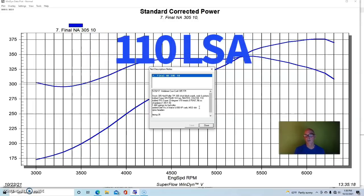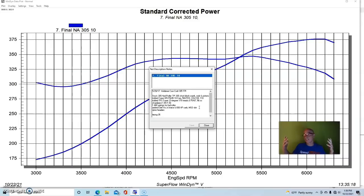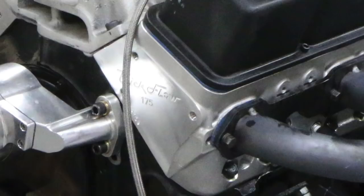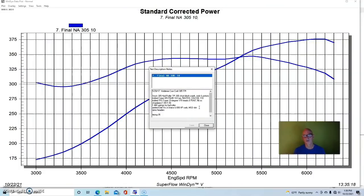Allowing this thing to flow, we replaced the factory iron heads with a set of Trick Flow Super 23 degree 175 heads, ideally suited for this 305. They had 56cc chambers. One limiting factor is we probably should have upgraded the valve springs. We were getting into valve float past 6200 or so.